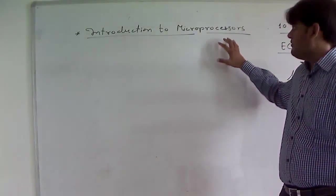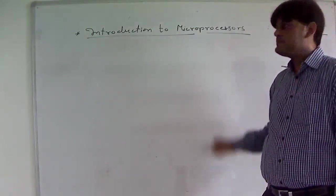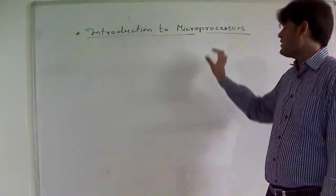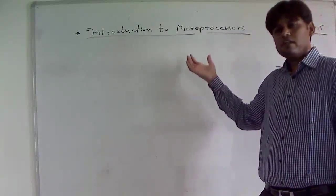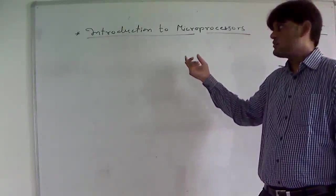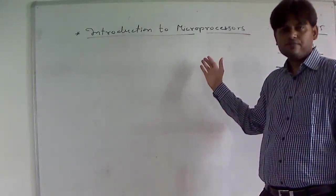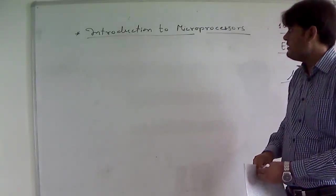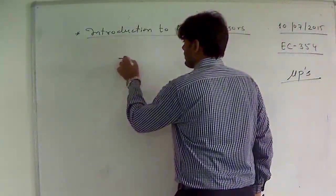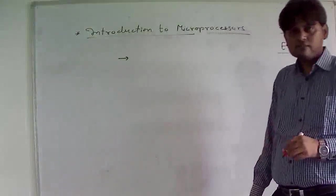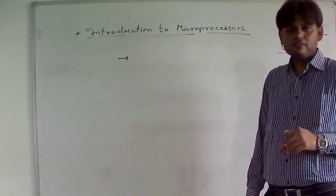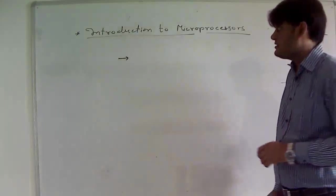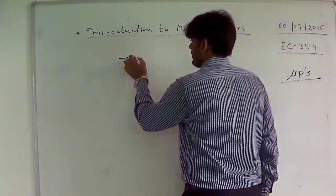Let us start with the definition of microprocessor. We can define microprocessor as — the name suggests 'micro' and 'processor' — a small device which can process. Moreover, we can define microprocessor as an electronic device, it is a digital device. So let us start building our vocabulary for the definition of microprocessor.